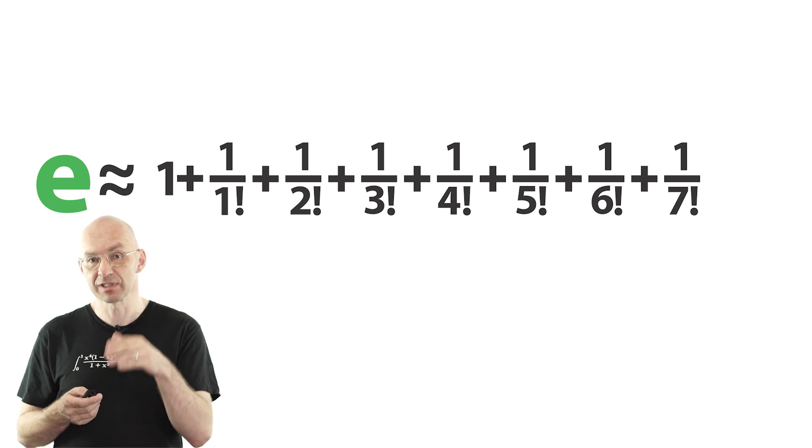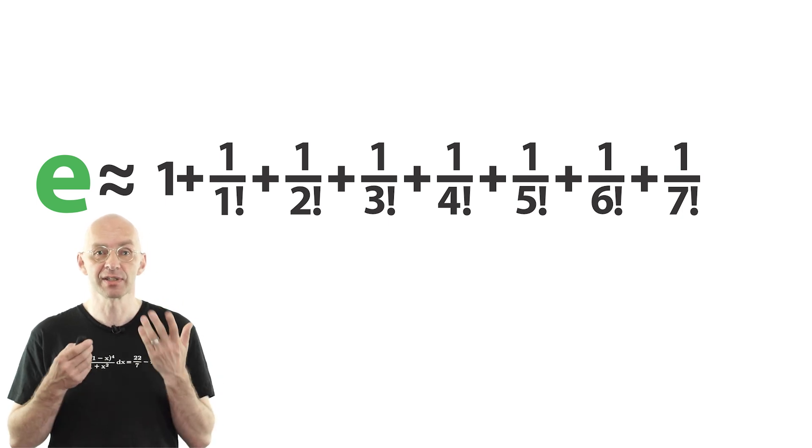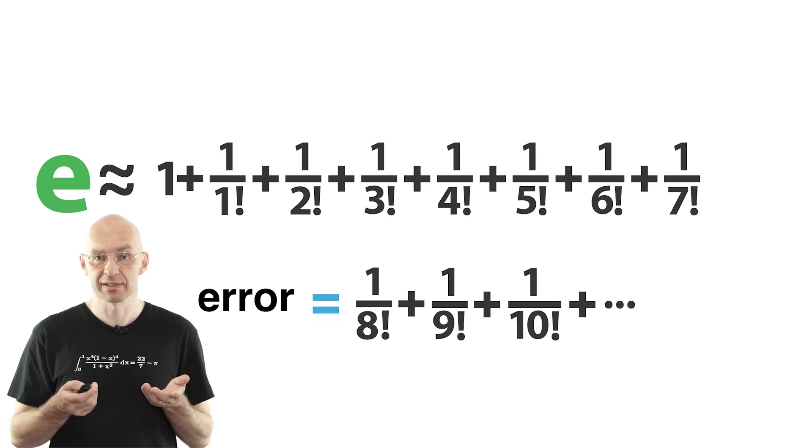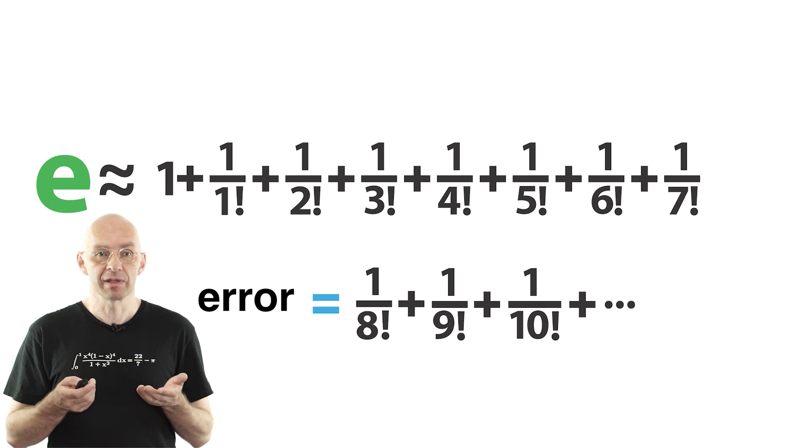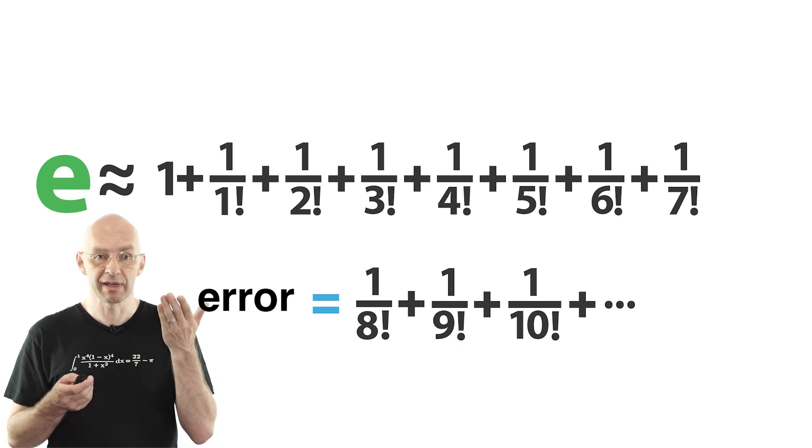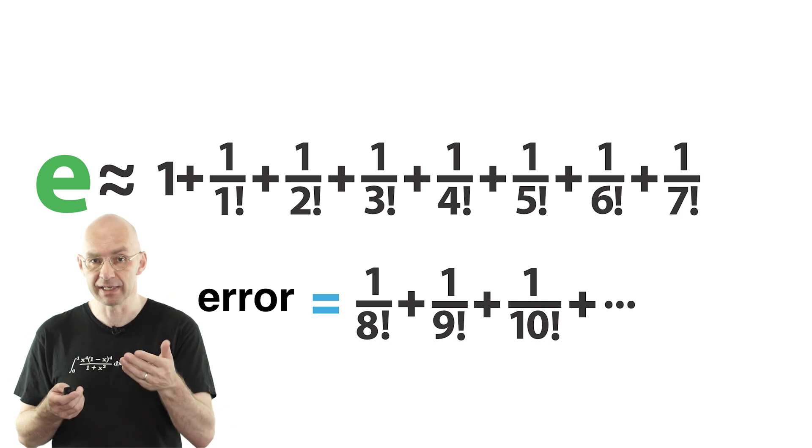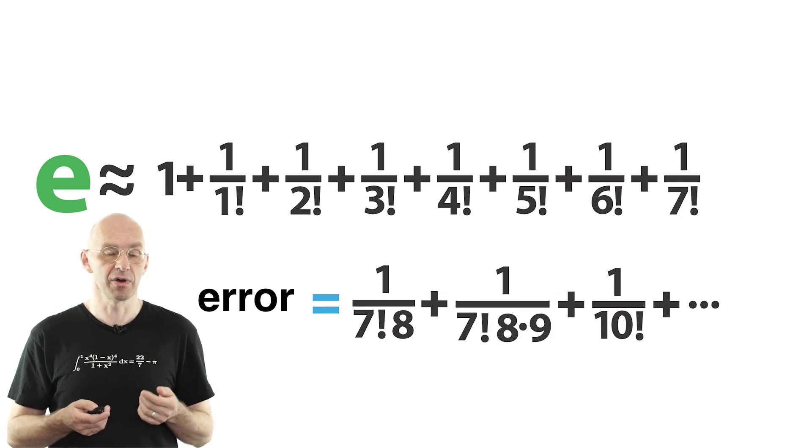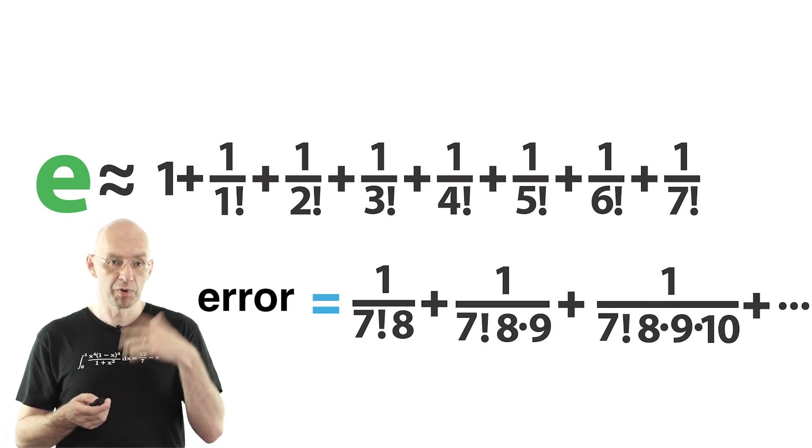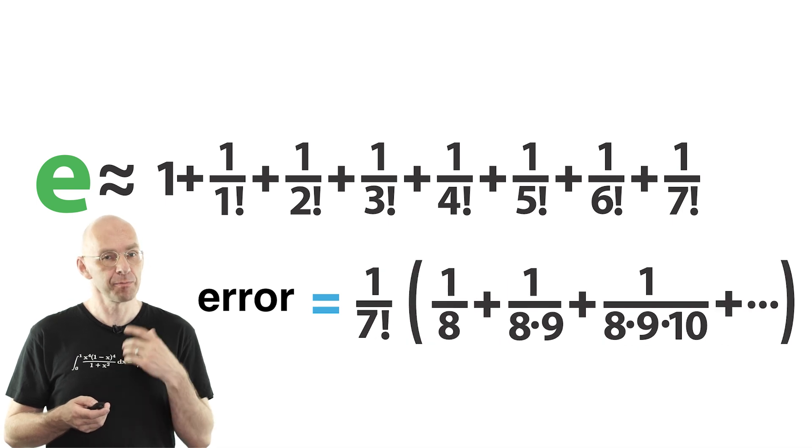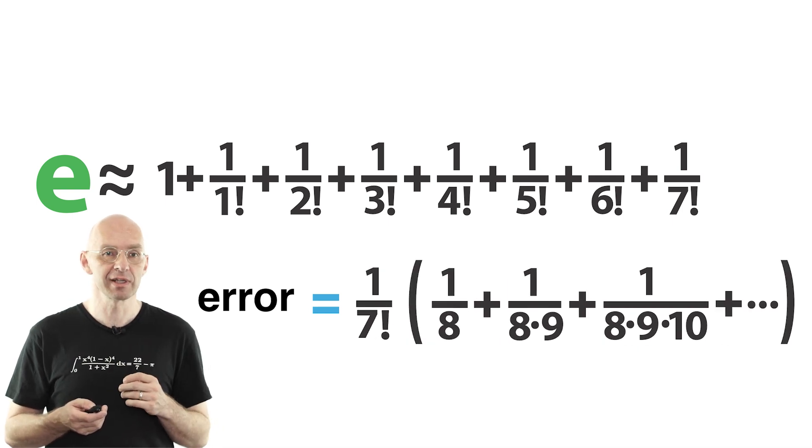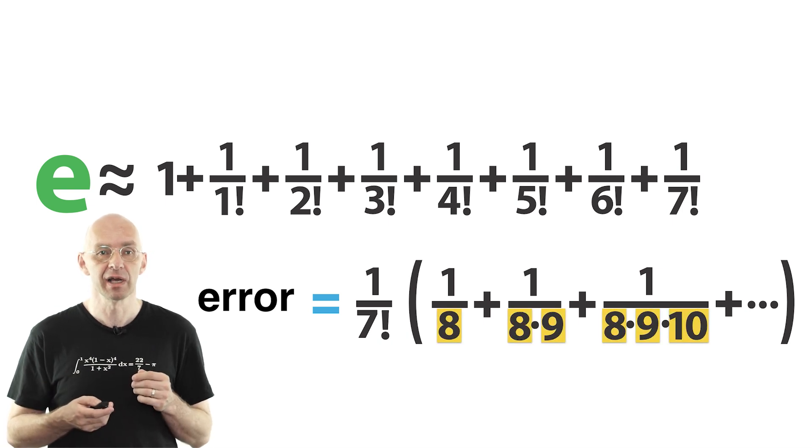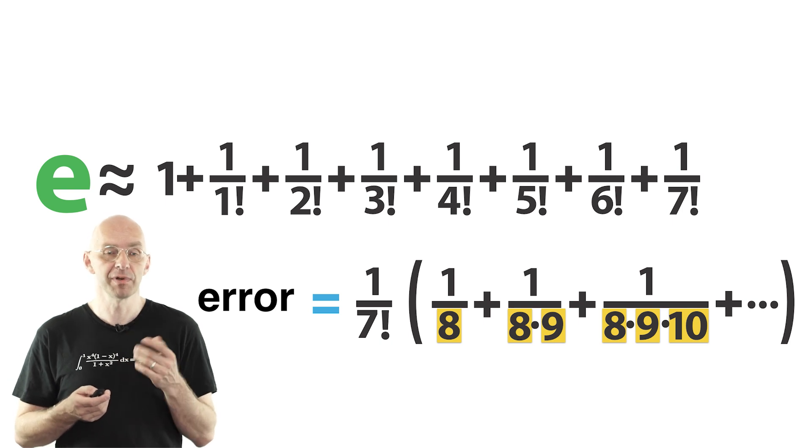Well, the error or the difference between e and this approximation is just the sum of the remaining terms. Let's estimate how large this error is. The 8 factorial at the bottom is just 1 times 2 times and so on to 7, which is 7 factorial times 8. 9 factorial is 7 factorial times 8 times 9 and so on. Let's pull out the 1 over 7 factorial. Now the bracket is still very complicated so let's do something drastic. Let's replace the 8, 9, 10, etc. in the denominators by 2's. This gives a new simpler expression.